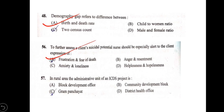In the rural area, the administrative unit of an ICDS project is — options: A) block development office; B) community development block; C) gram panchayat; D) district. Option B, community development block, is correct.